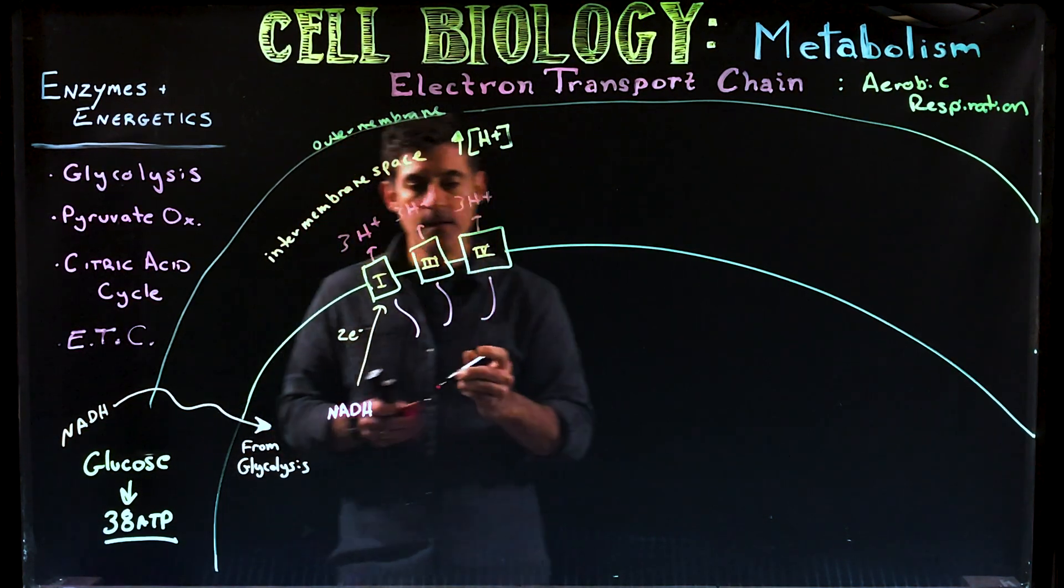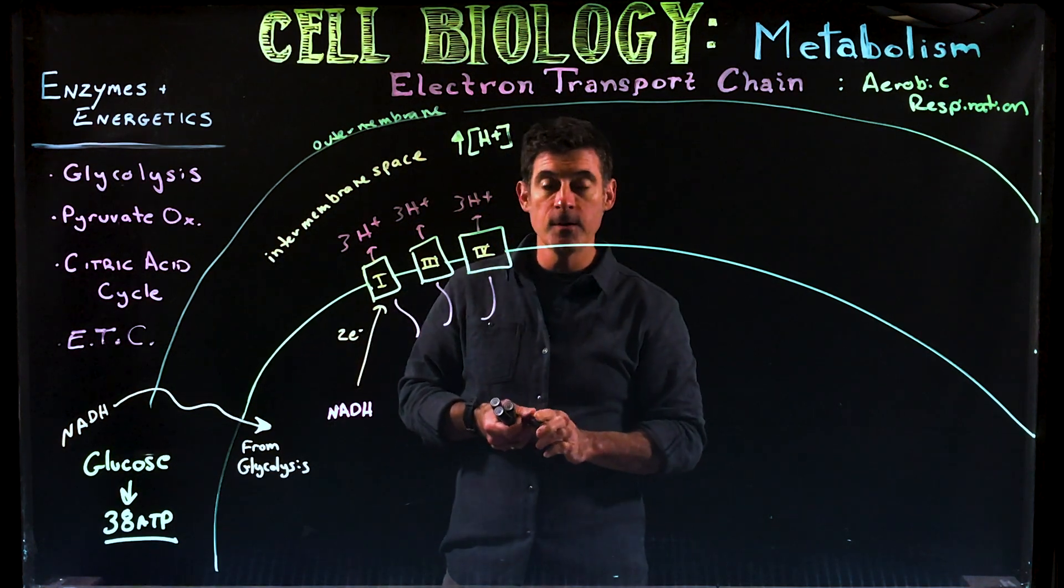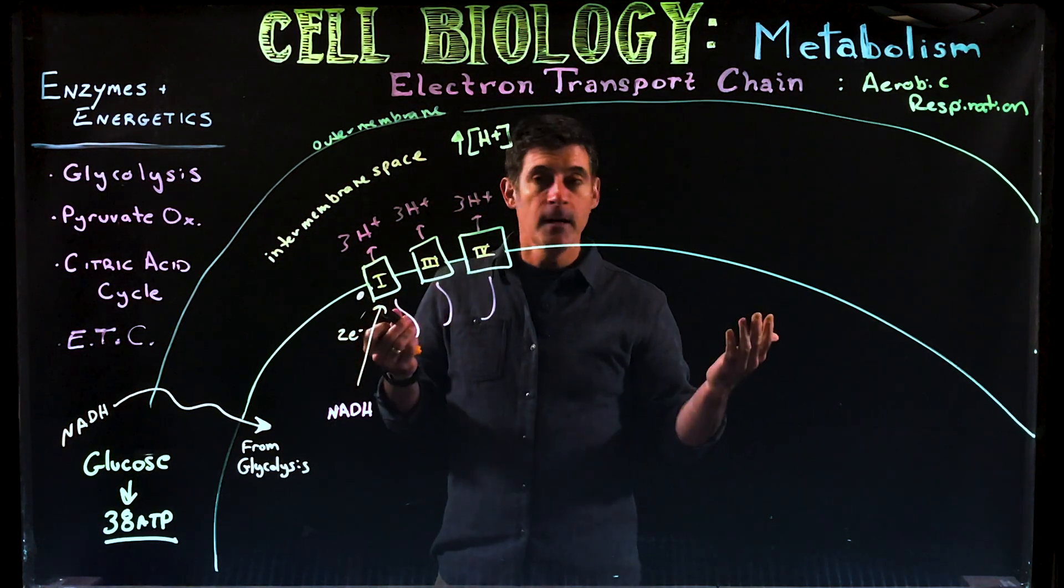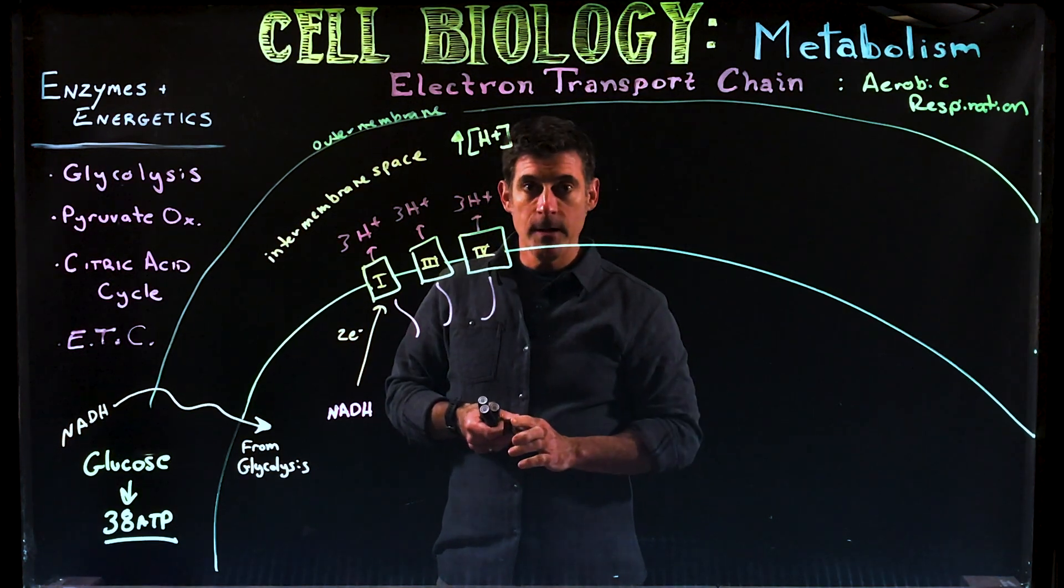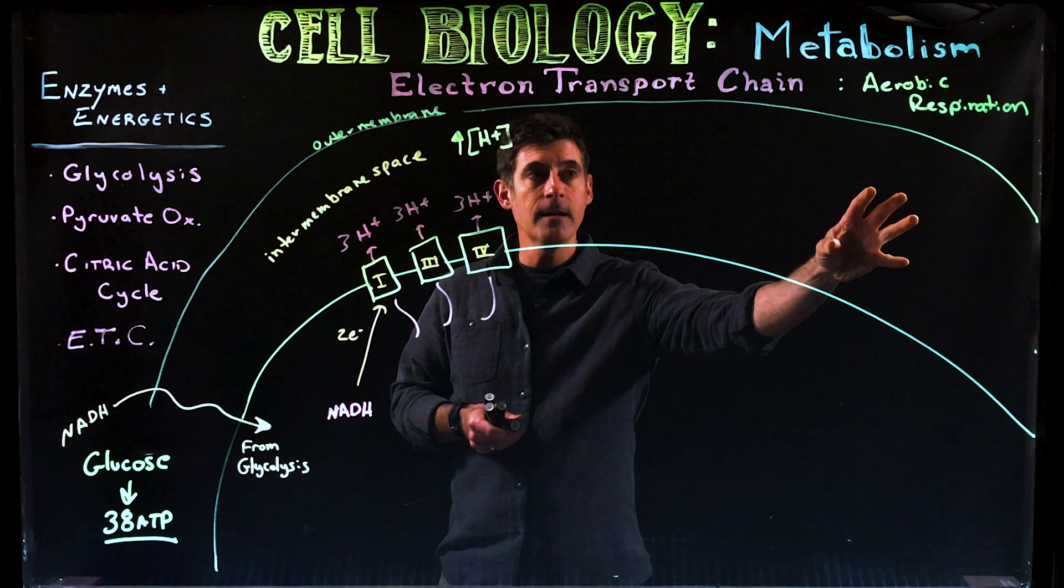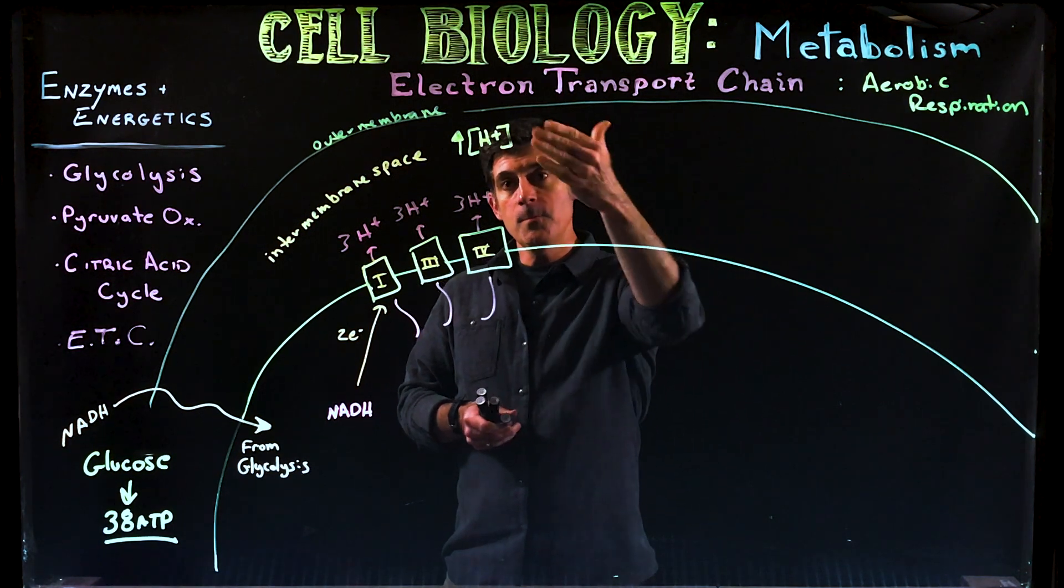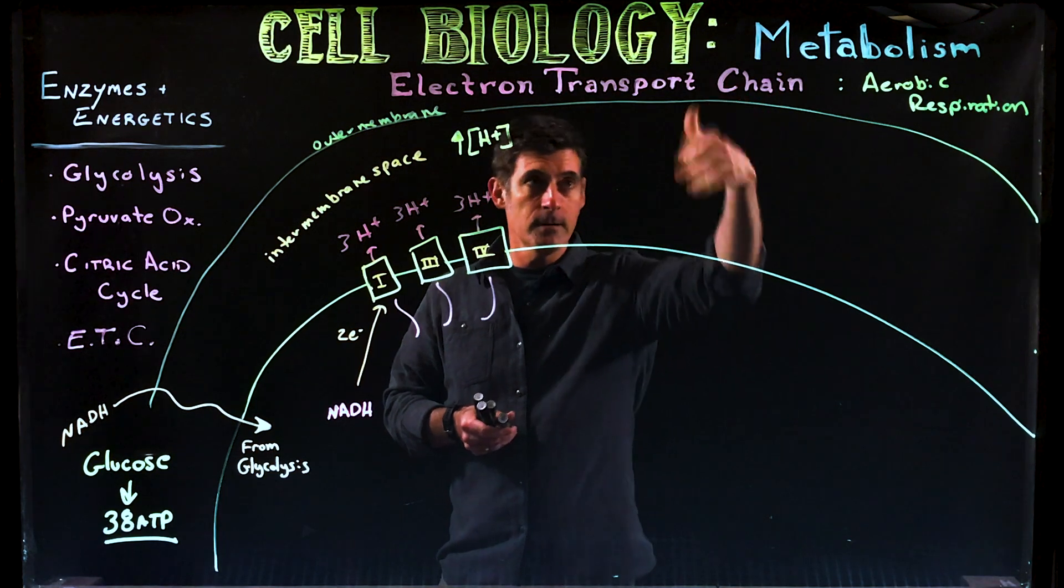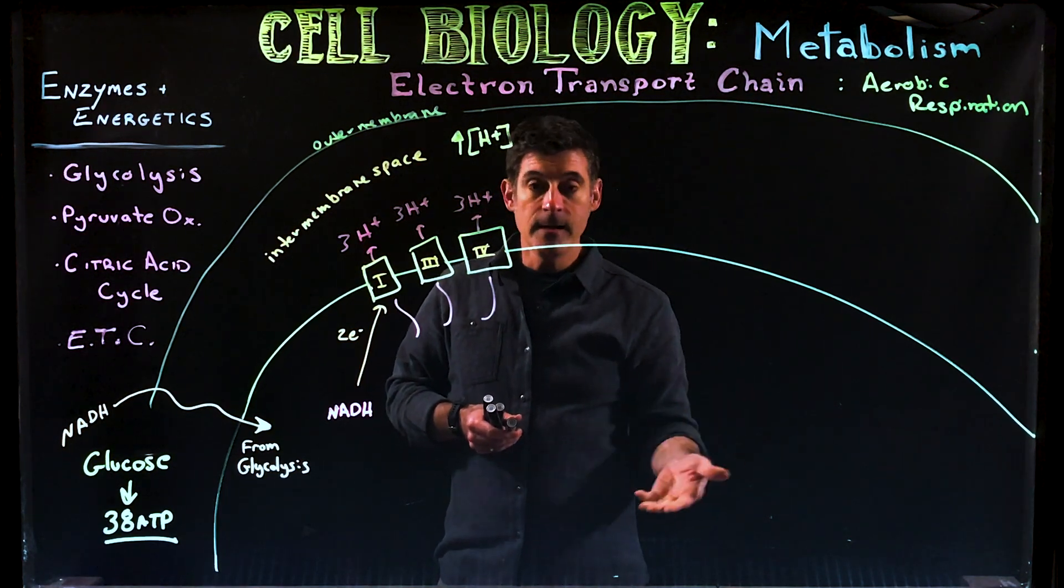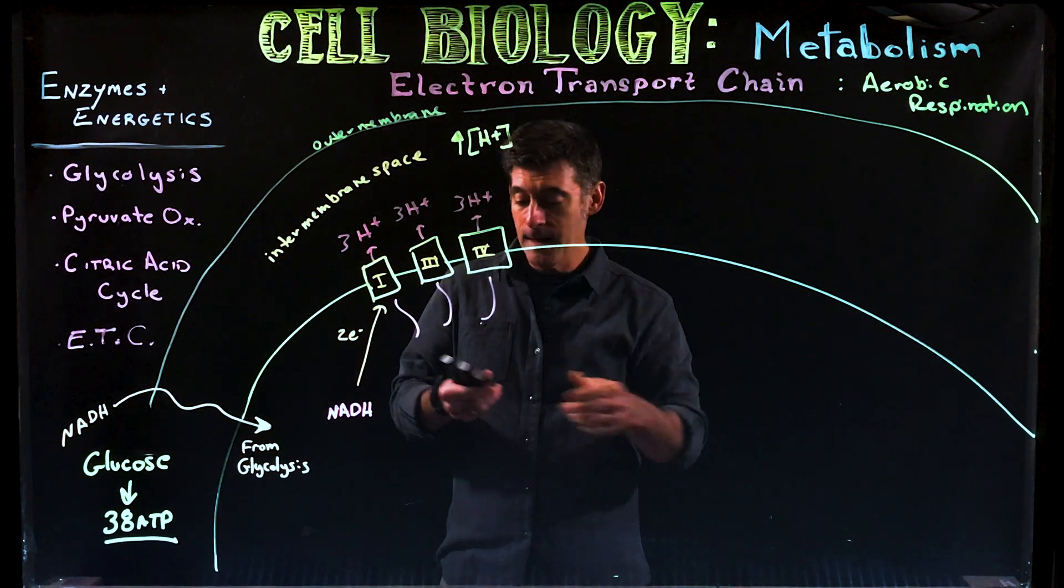They are pumping protons from the mitochondrial matrix to the intermembrane space. The concentration of hydrogen ions here in the intermembrane space is starting to become very different than the cytoplasm and the matrix of the mitochondria itself. So we have a very high concentration area here, and these molecules or ions would then like to diffuse out. They'd like to go either to the cytoplasm or back into the mitochondrial matrix.